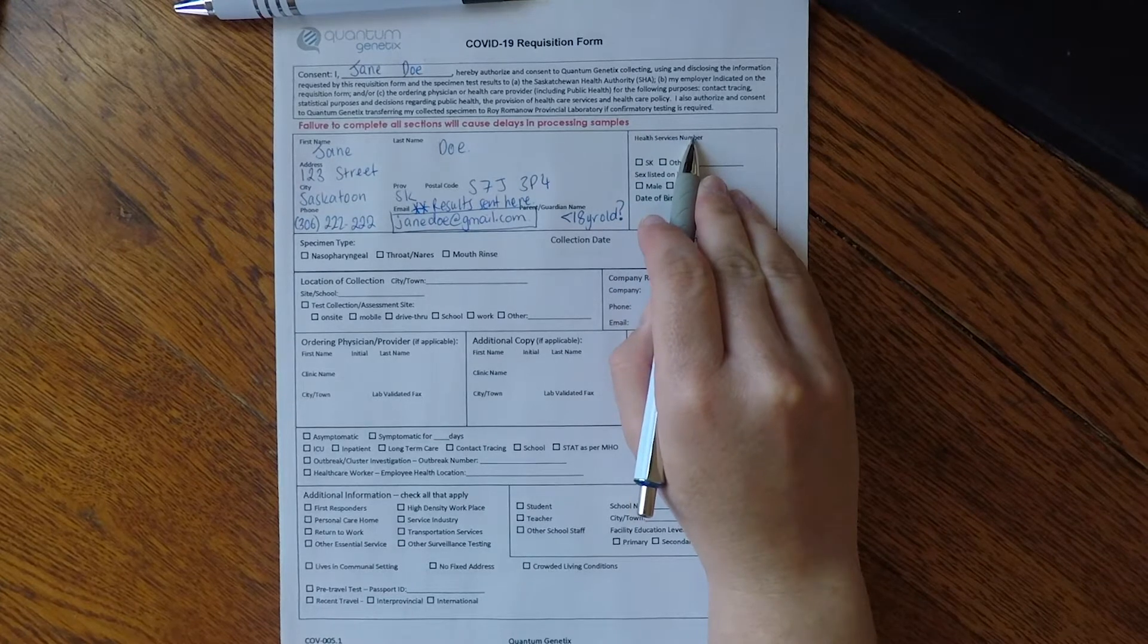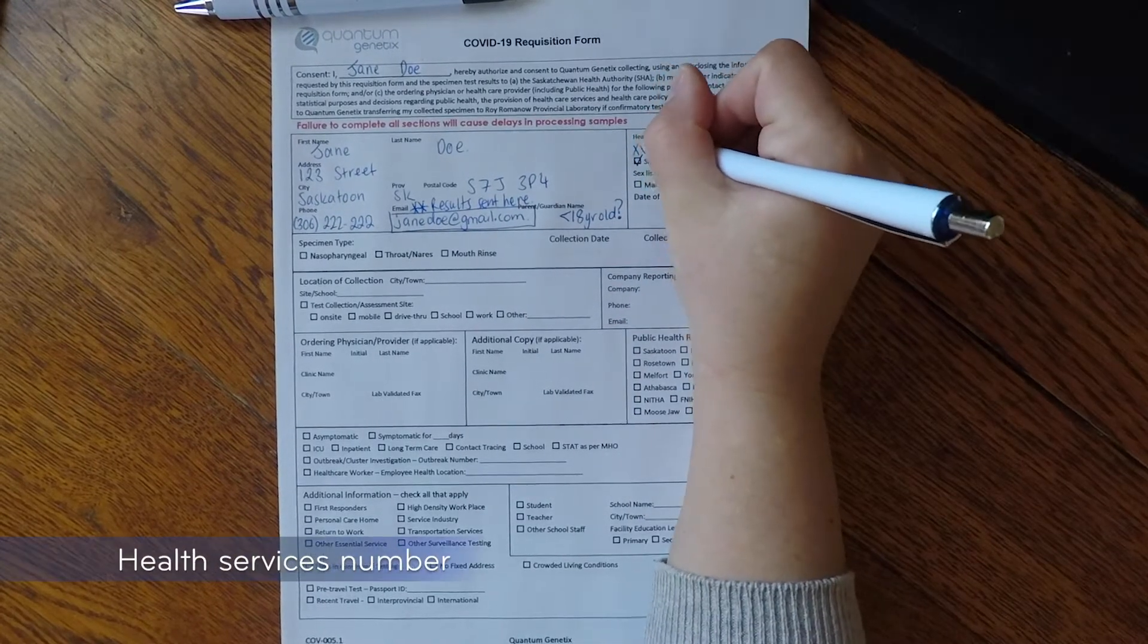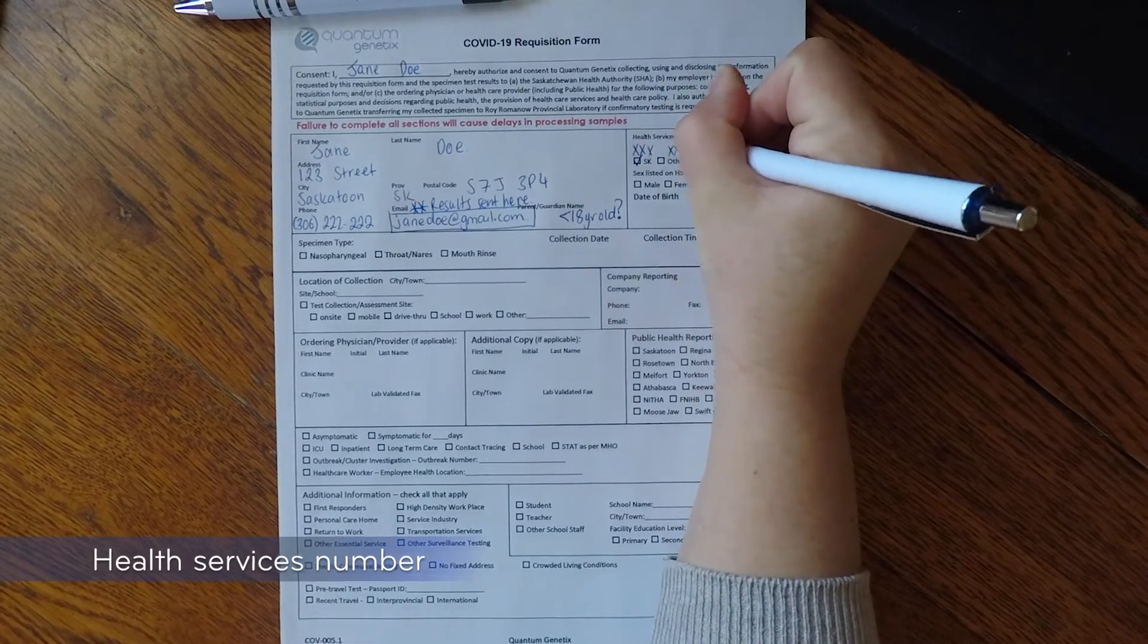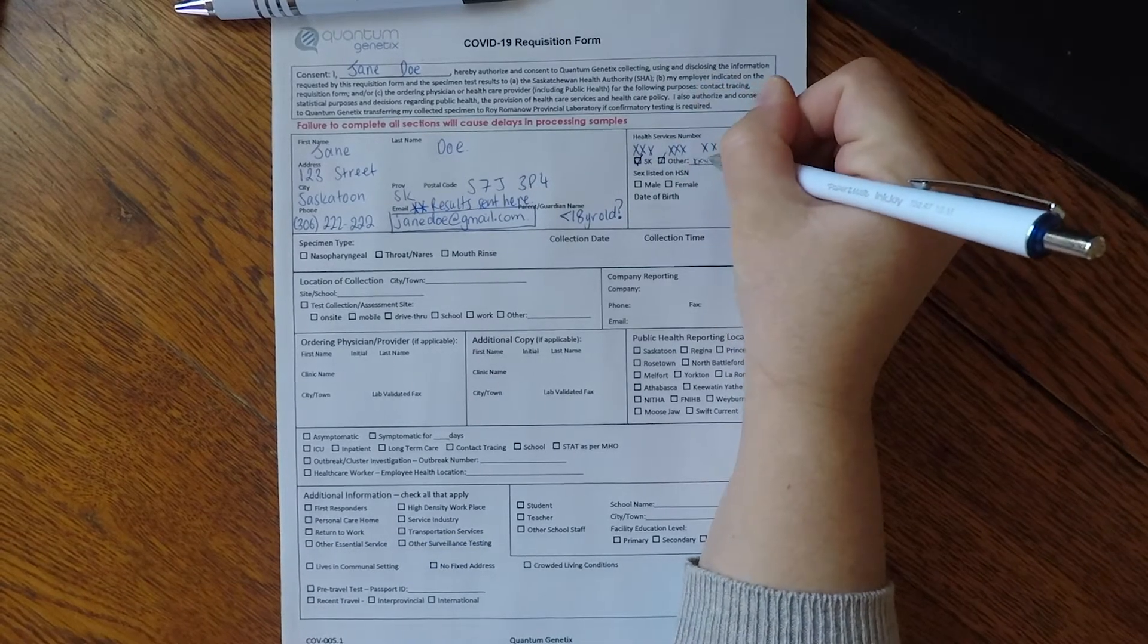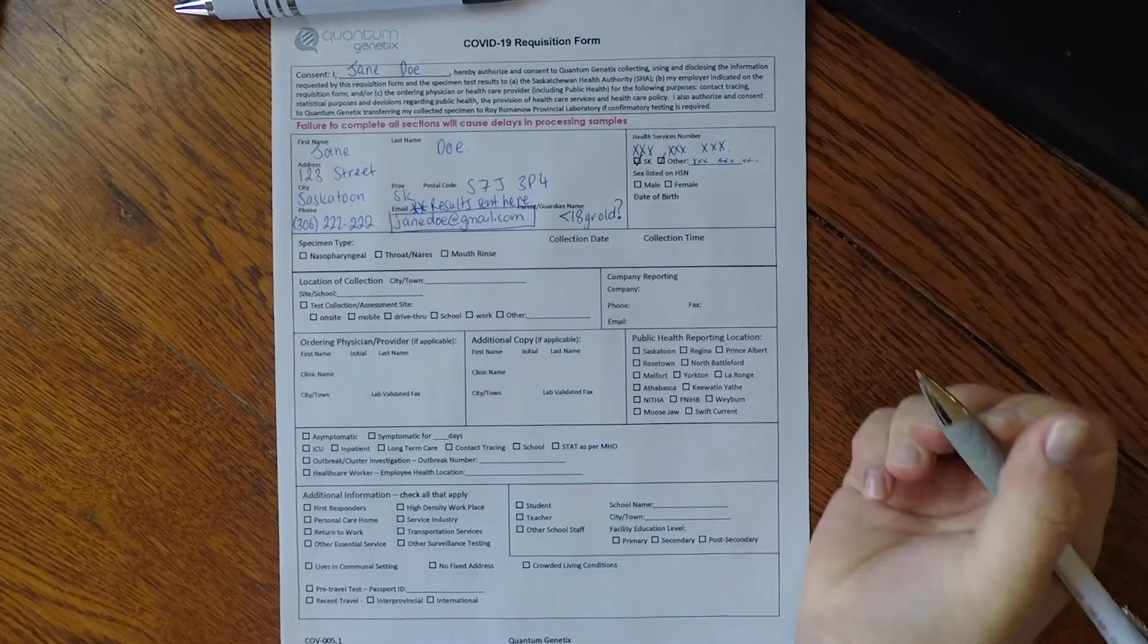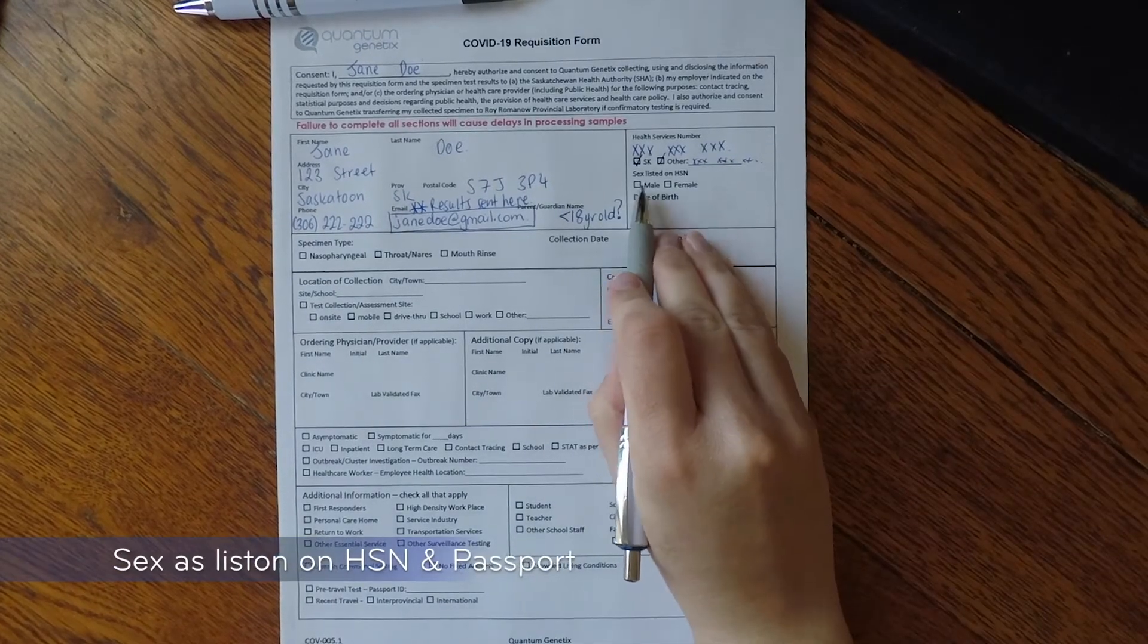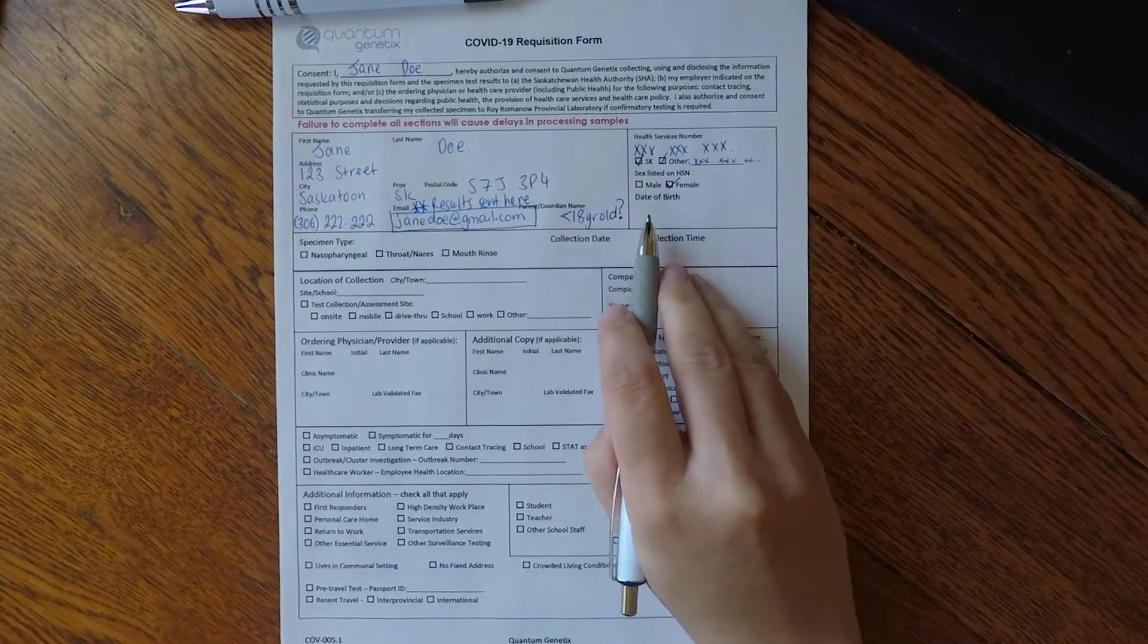Next, move up to the top right hand corner and fill in your health services number indicating whether it is from Saskatchewan or another Canadian province. Then select the gender listed on your health services number and the same that is shown on your passport.